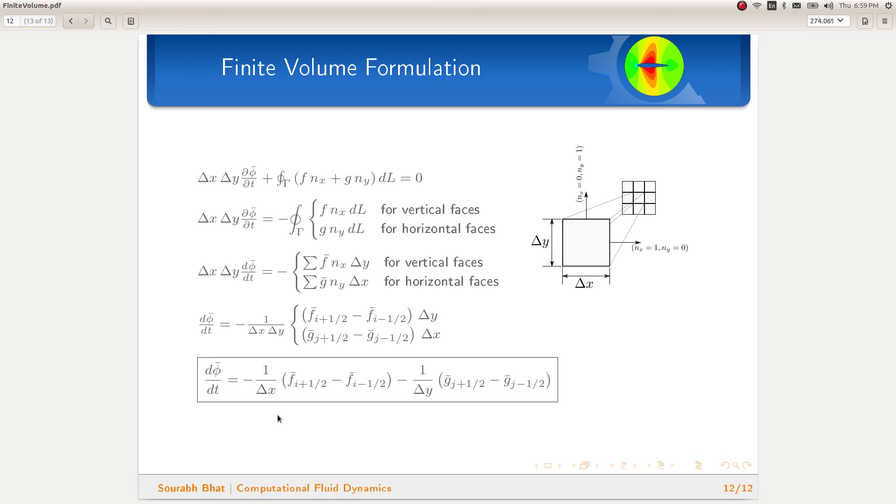One final thing which you may have already observed is that this equation looks a lot like the one-dimensional formula with this additional term for the y-direction. So, with this we can conclude that the finite volume method for a Cartesian mesh behaves similar to two one-dimensional problems. Therefore, we can go ahead with the same code and make a few modifications in our code to solve two-dimensional problems.